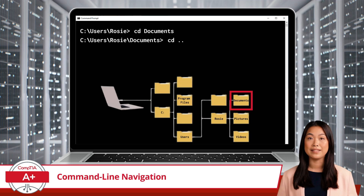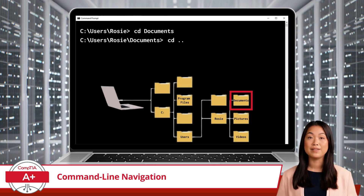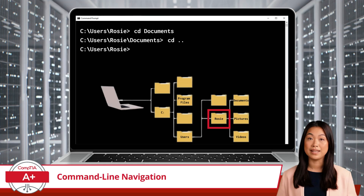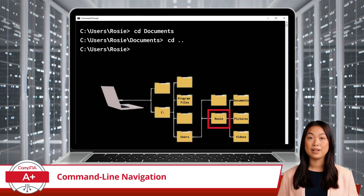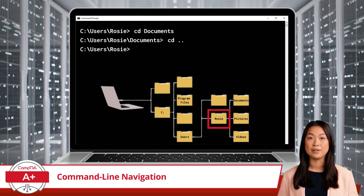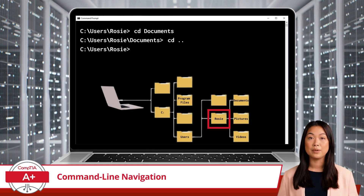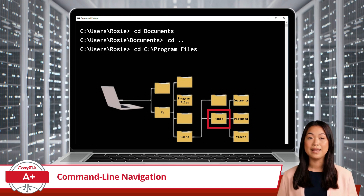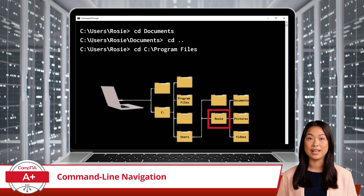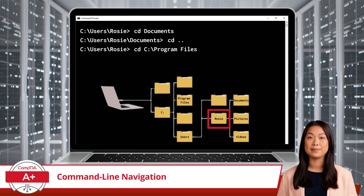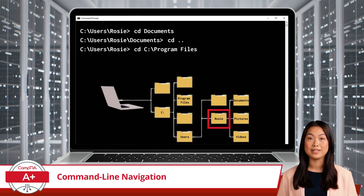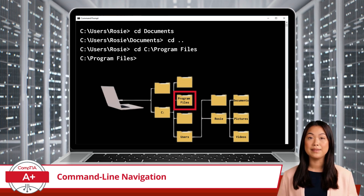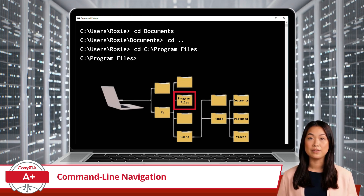Conversely, if you type the command CD dot dot, you're telling the system, let's go back up one level, similar to stepping out of a subfolder and back into its parent folder. Additionally, you can teleport directly to a specific location in the file system by using an absolute path, such as the command CD C:\Program Files. By specifying an absolute path, we can jump directly to the designated folder — no need to take the scenic route through every folder along the way.